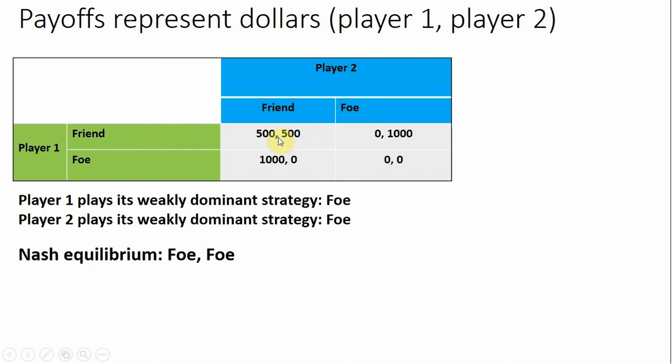And by the same token, this 500-500 is not a Nash equilibrium. If you're player one playing friend and player two's playing friend, if you had a chance, you would like to change your strategy to foe. You would move from getting $500 to a thousand. So this friend-friend is not a Nash equilibrium. Either player would like to change their strategy, given the strategy of the other player.